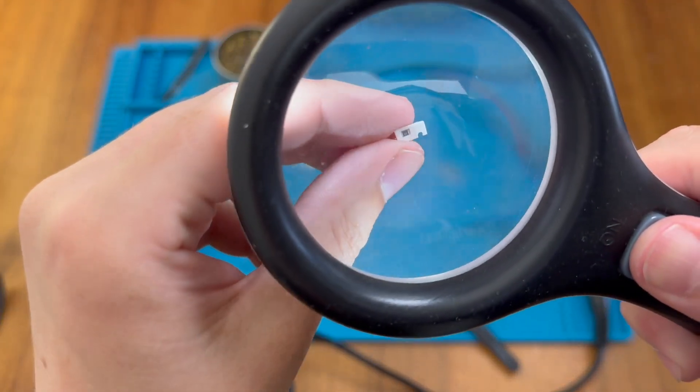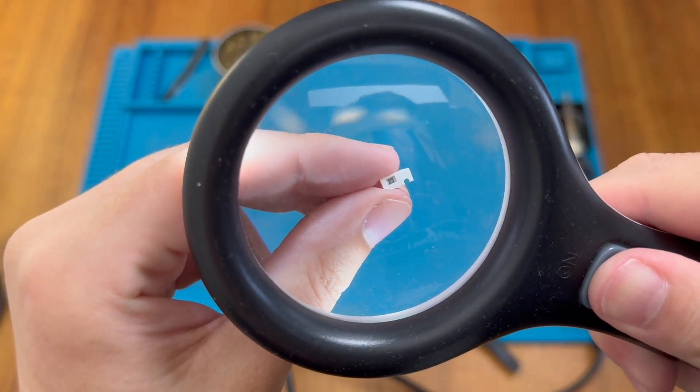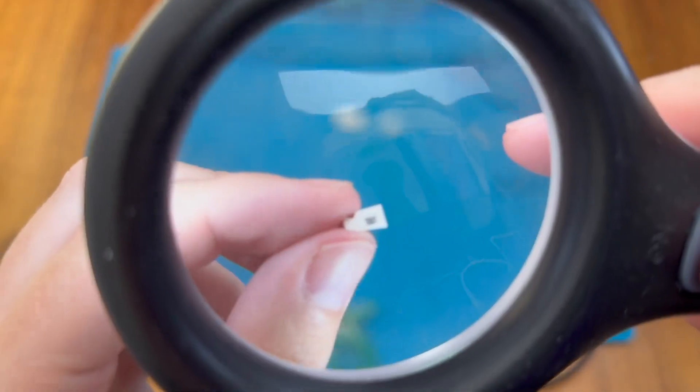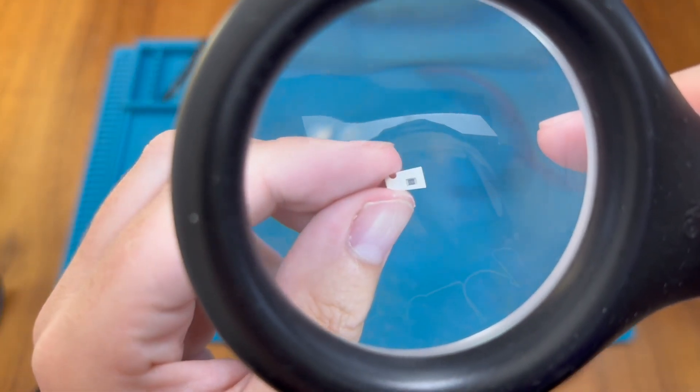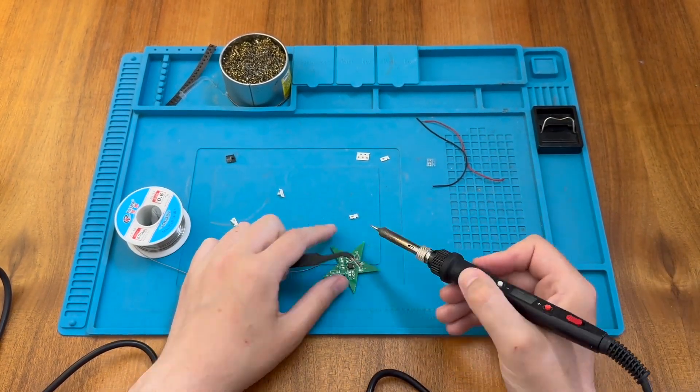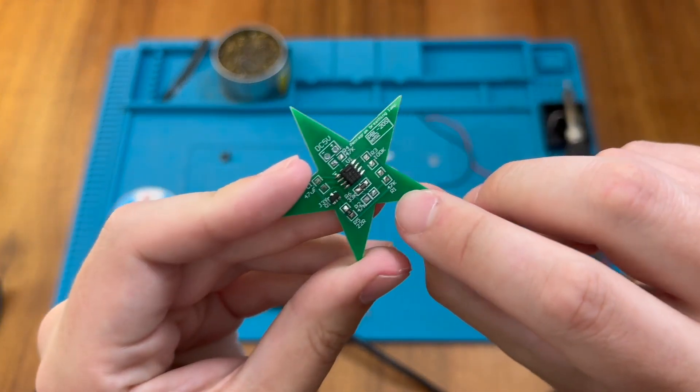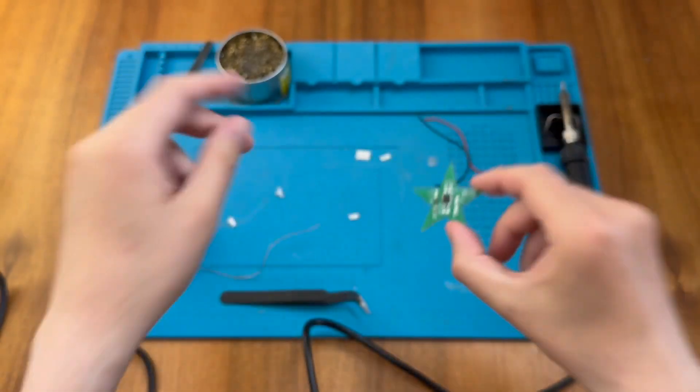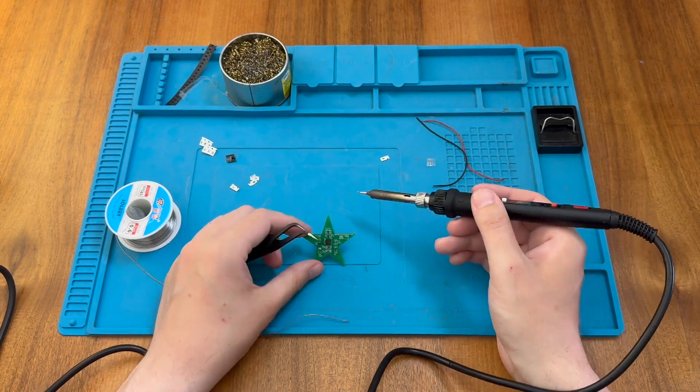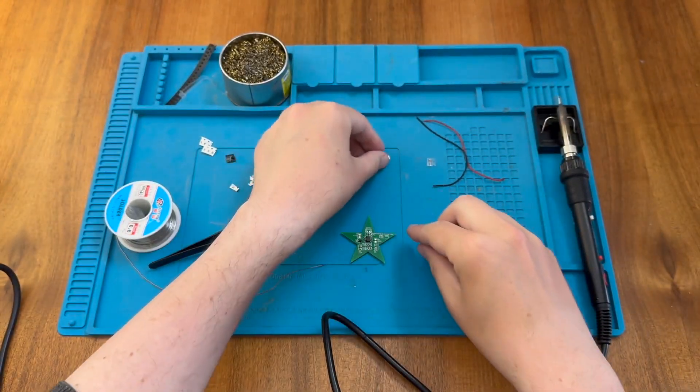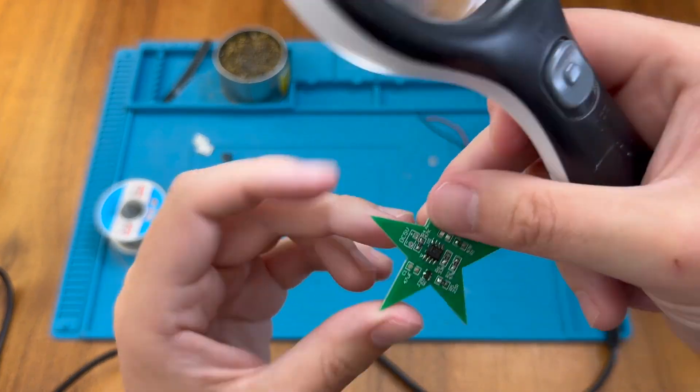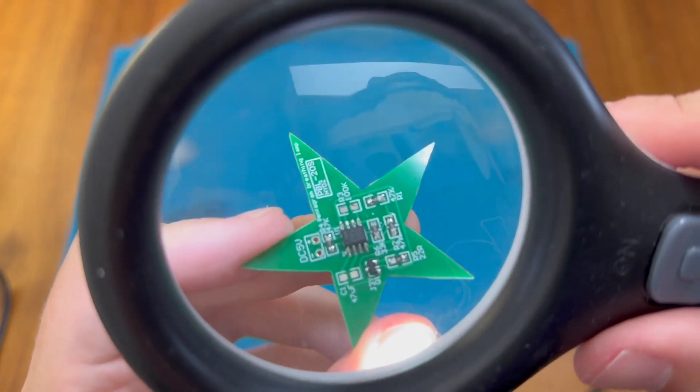So next we have our 22 ohm resistor, so I don't know if you can make that out. Yeah, hopefully you can see 22R. And next we have our 33K resistor, that's 333. Okay, so then we have three 47K resistors that go around here. Okay, now we have our 100K resistor. So I didn't show you on the other ones, but this one's 104, hopefully you can see. And you can see an example of the 473s, hopefully, on the top right there.